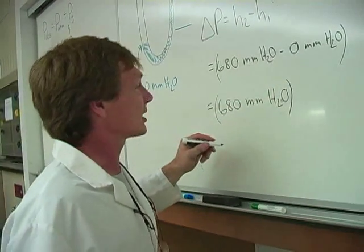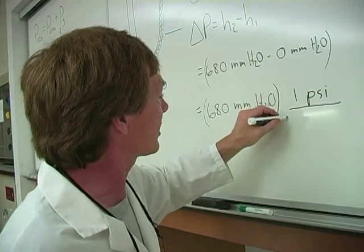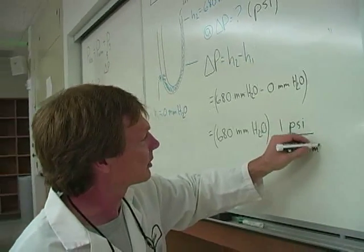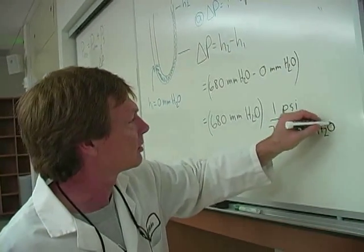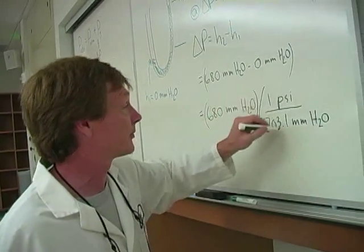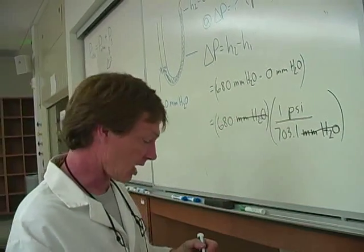Turns out, I believe that 1 PSI, I need PSI on the top, is the same as about 703.1 millimeters of water. I think that's the right value. You'll want to check to make sure. Now, did I do it right? Sure, the millimeters of water cancel out, and PSI is on top.